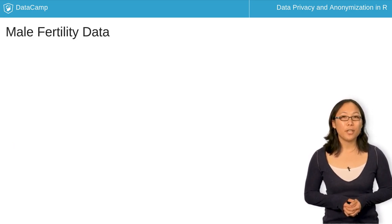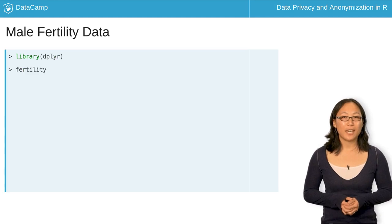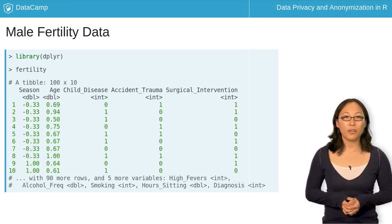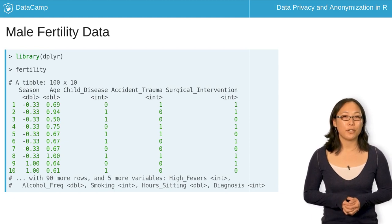For this lesson, you'll be looking at the male fertility data. We see there are 100 observations and several variables that contain personal information.